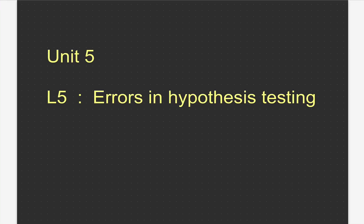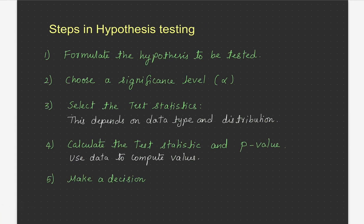Hello everyone. This is the fifth video on inferential statistics. In this video we discuss errors in hypothesis testing. In the previous video we learned the steps involved in hypothesis testing — how to formulate a hypothesis, how to select test statistics, and how to evaluate the test statistic value. In this video we discuss level of significance, and the coming sessions will discuss p-value and how to make decisions given a test statistic value and p-value.